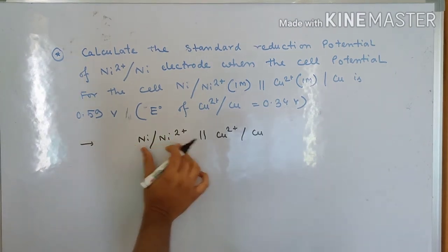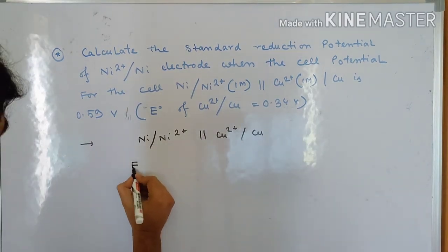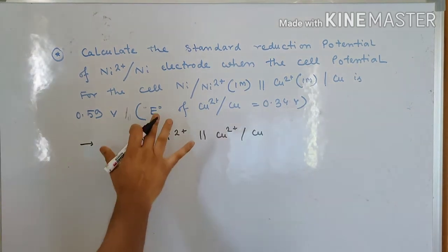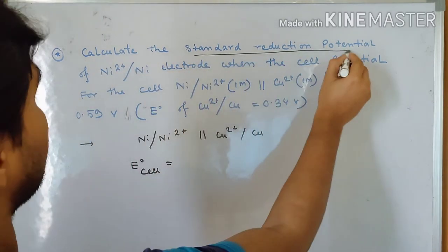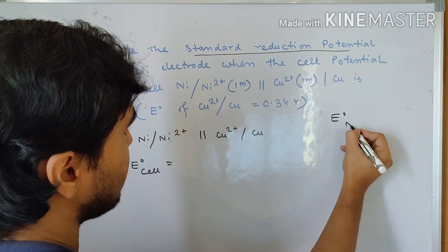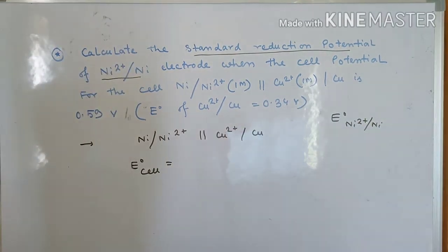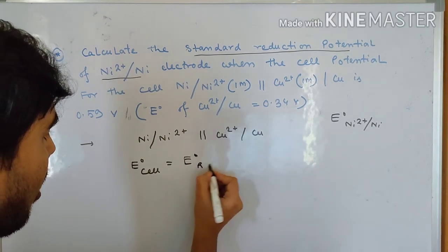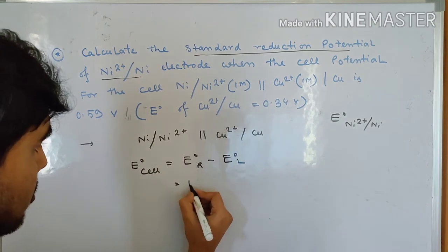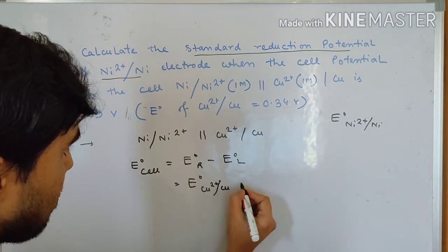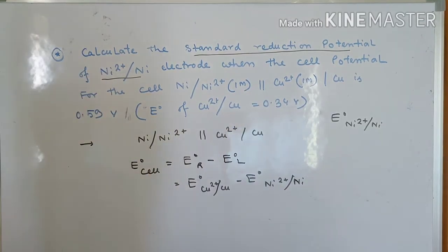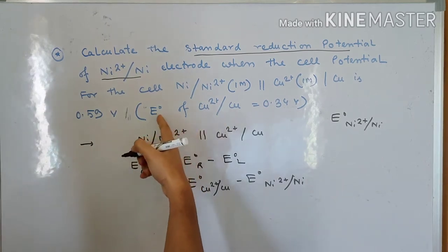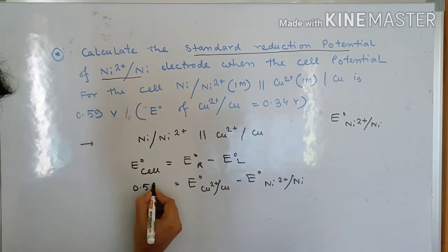Oxidation occurs at anode and reduction at cathode. To find E⁰ of the individual electrode, we use E_cell = E⁰_R − E⁰_L. Here: 0.59 V = E⁰(Cu²⁺/Cu) − E⁰(Ni²⁺/Ni). So: 0.59 = 0.34 − E⁰(Ni²⁺/Ni), which gives E⁰(Ni²⁺/Ni) = 0.34 − 0.59 = −0.25 V.